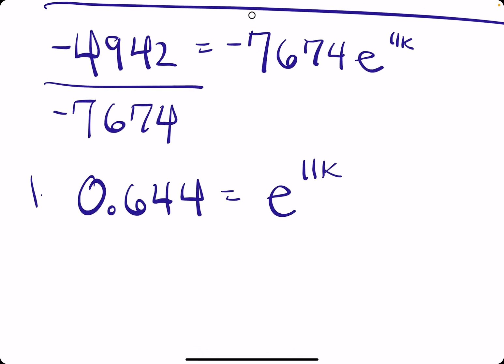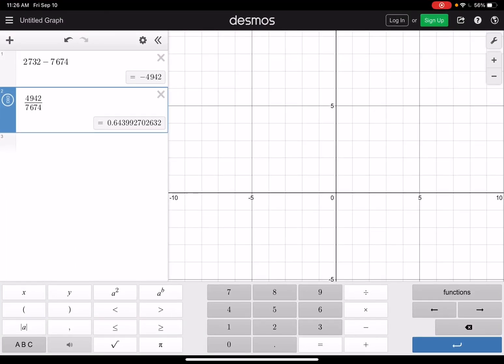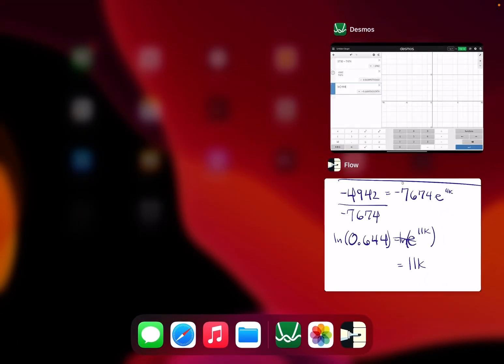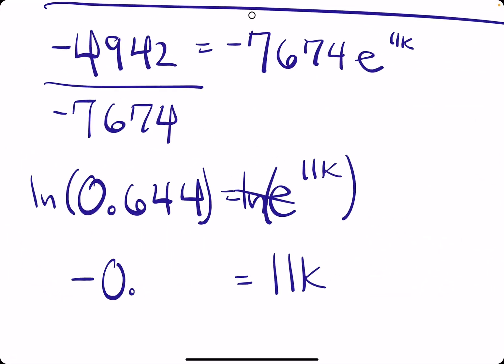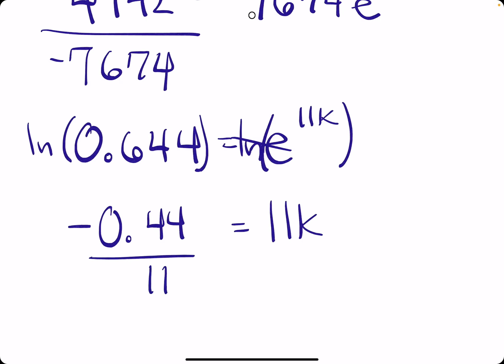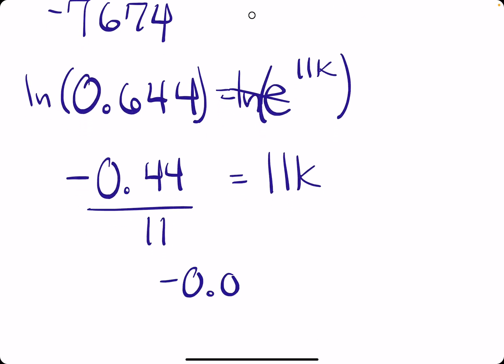We eliminate the E by taking the natural log of both sides. LN and E cancel, leaving us with 11K. We take the LN of 0.644 and get negative 0.44. We divide by 11, and that should be negative 0.04 equals K.